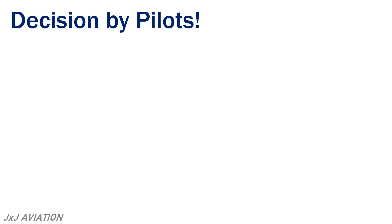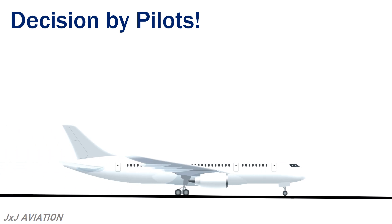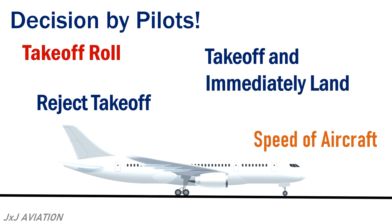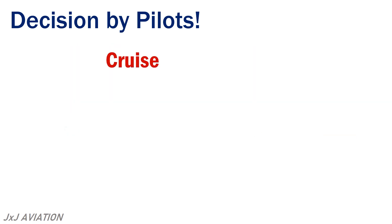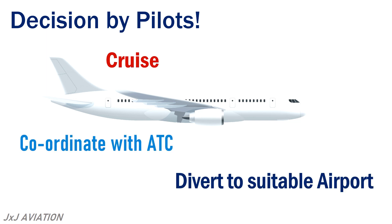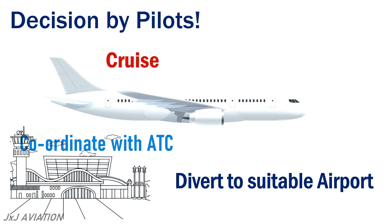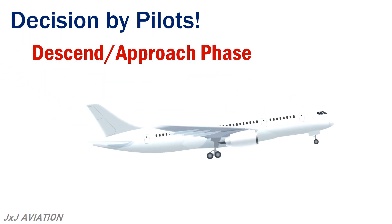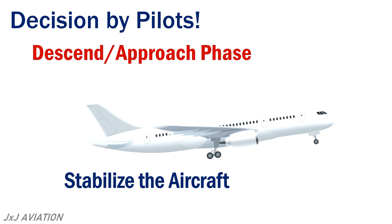Depending on when the engine failure occurs, a suitable decision has to be taken by the pilots. If the failure occurs during the takeoff roll, depending on the speed of the aircraft when the failure occurred, the pilots may reject the takeoff or continue with the takeoff and immediately land at the same airport or any other suitable airport. If the failure occurs during cruise, the pilots should coordinate with the ATC and divert to a suitable airport where a safe landing can be made. If the failure occurs during the descent or approach phase, the pilots should ensure that the aircraft is stabilised and land the aircraft safely.